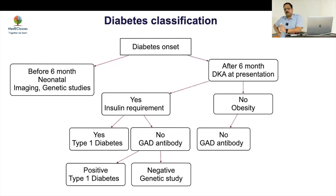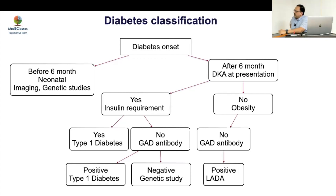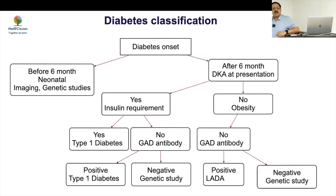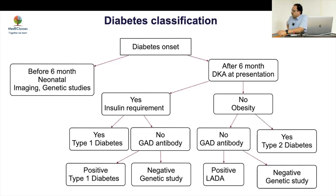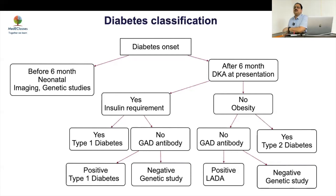On the other hand, if there is no DKA and no obesity, this is a confusing picture — it can be MODY or LADA, as it may evolve over time. Do a GAD antibody: if positive, this is LADA; if negative, go for genetic study. If there is obesity with no ketosis and the child is stable, this is most likely type 2 diabetes. You don't need to do investigations in everybody — just classify like that.